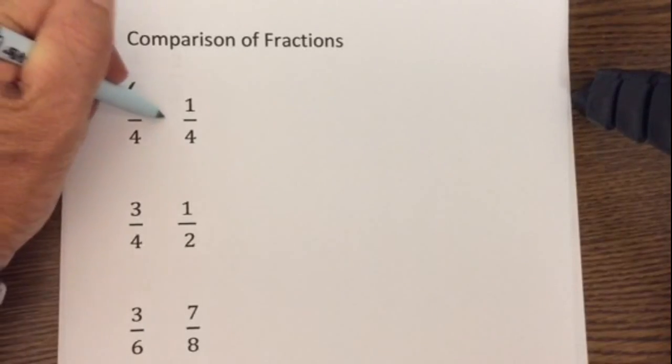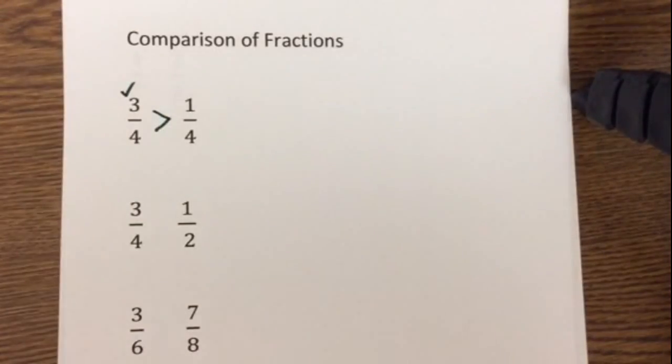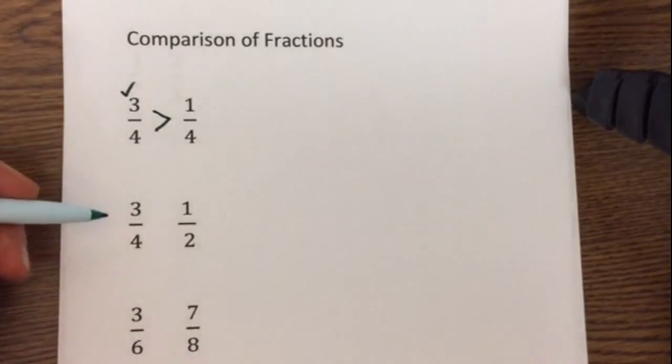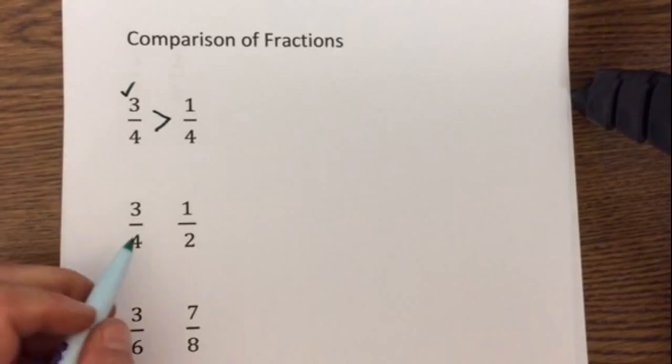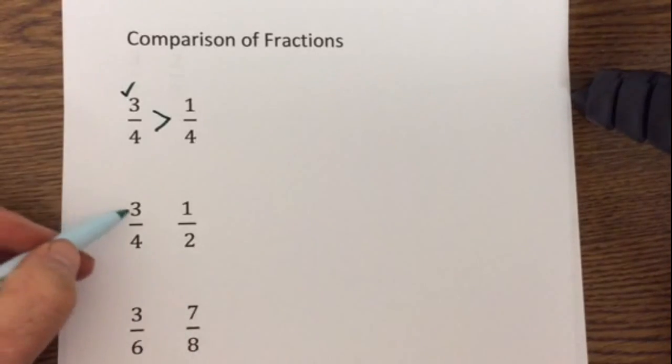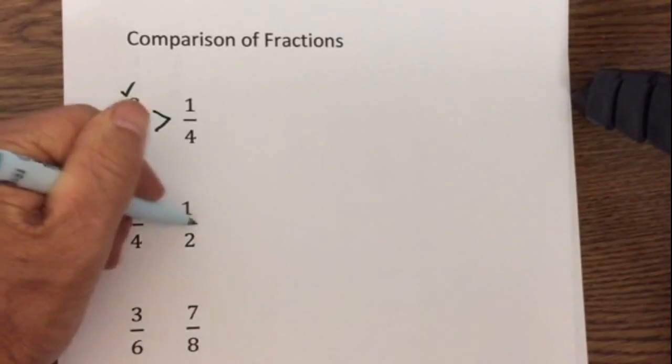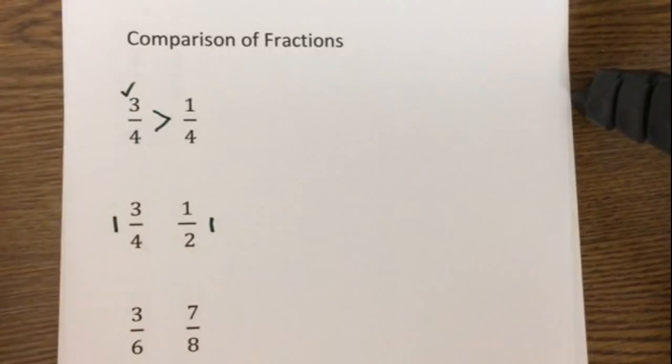In this next example, I can quickly glance the denominators are different. 4 minus 3 is 1, 2 minus 1 is 1, so all I have to do is the largest numerator, it's going to be the largest fraction, so 3 fourths is greater than 1 half.